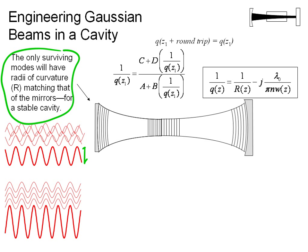And so the cavity essentially selects Gaussian beams that are in phase across the entire surface of the mirror after one round trip.